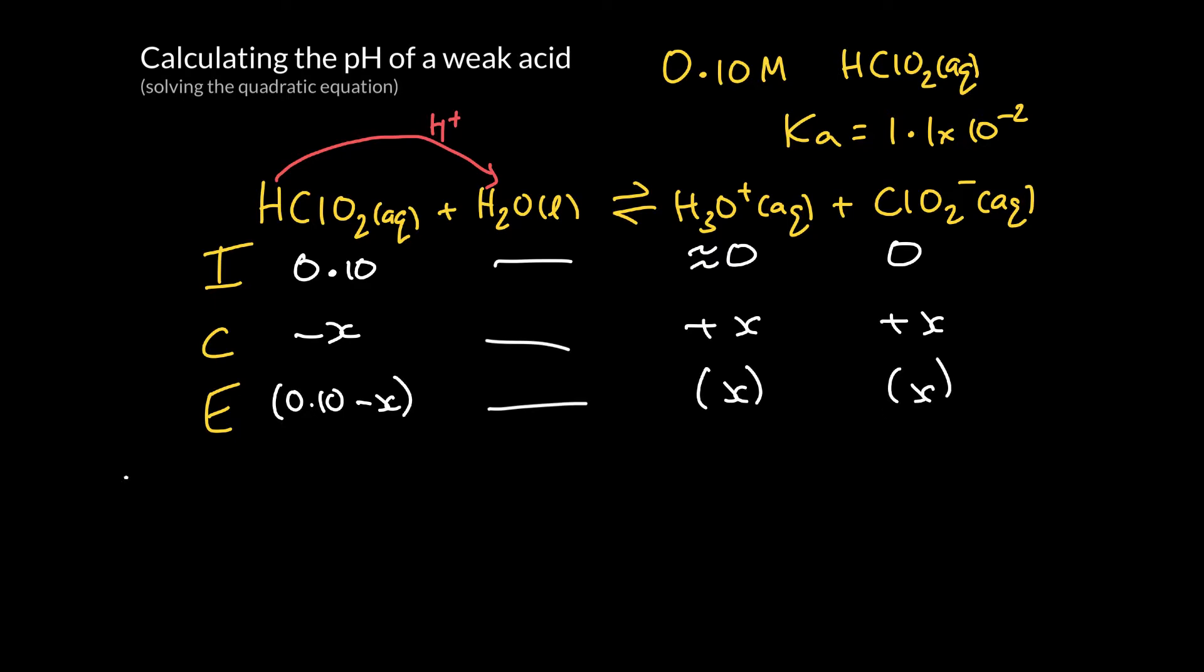Alright, now we're going to solve for the equilibrium constant. So we know Ka is the concentration of hydronium at equilibrium times by ClO2 minus divided by the original HClO2 equilibrium concentration. And what was that value? So 1.1 times 10 to the minus 2. And we've solved for that in terms of x's. So it's x times x on the top. So I'll write x squared. And on the bottom, it is 0.1 minus x, right?